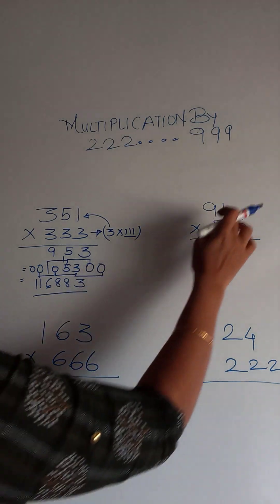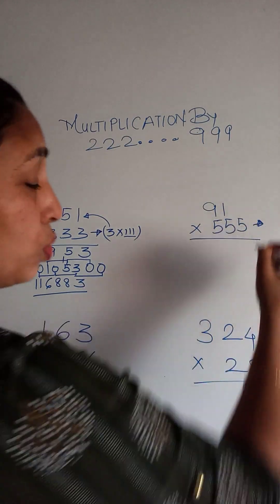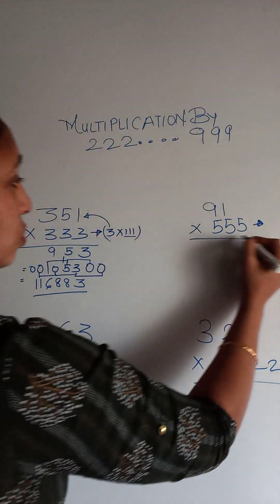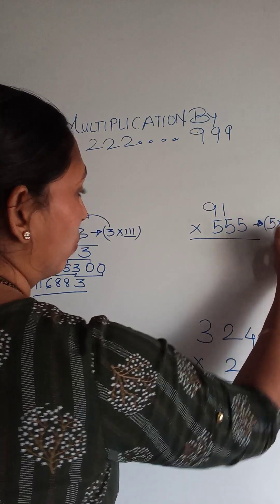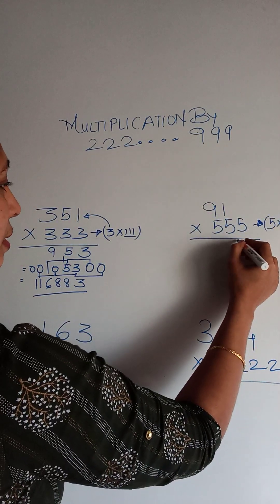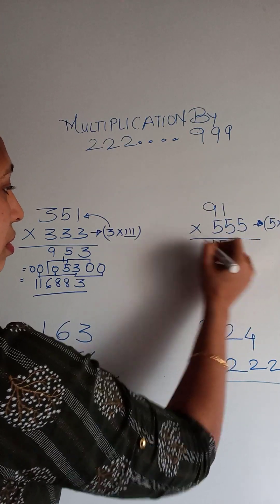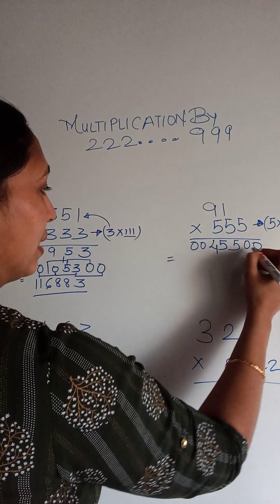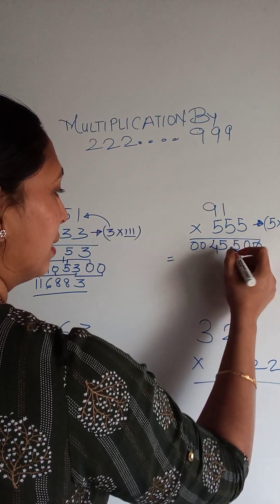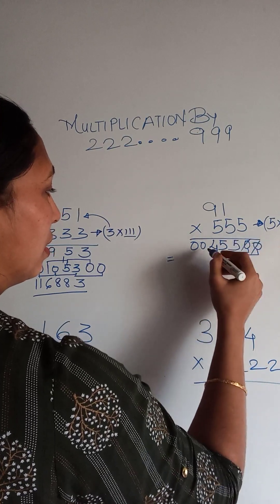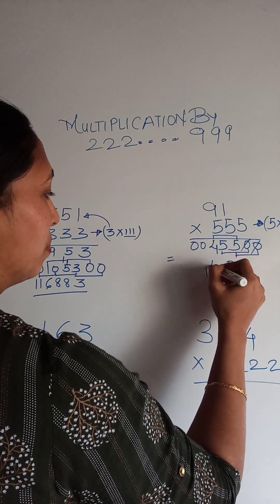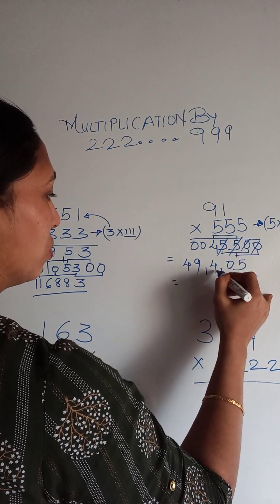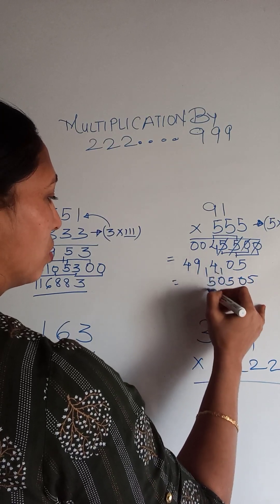So the next example is 91 into 555. Don't try to flip this question, because we're going to do it the easy way. So 555 is 5 into 111. Now multiply 5 with 91: 5 into 1 is 5, 5 into 9 is 45. Then we are going to use the double knot sandwich method, multiplying with 111. So: 5 plus 0 plus 0 is 5, then 5 plus 5 is 10, then 4 plus 5 is 14 (carry 1), then 4 plus 5 is 9, then 4. So the final answer is 50,505.